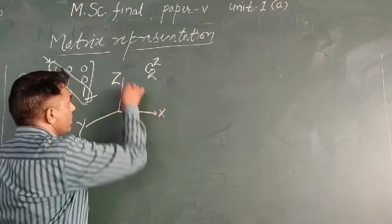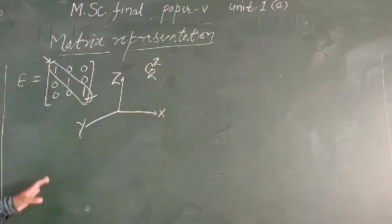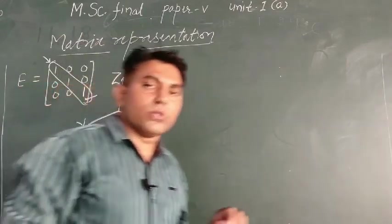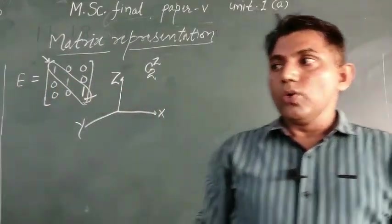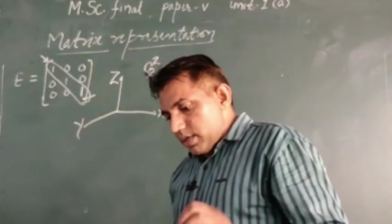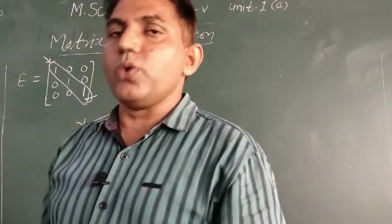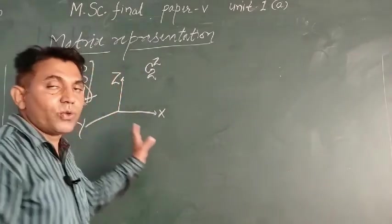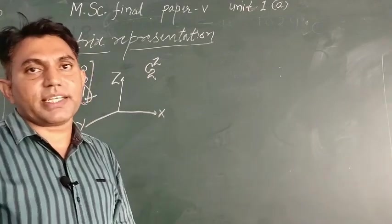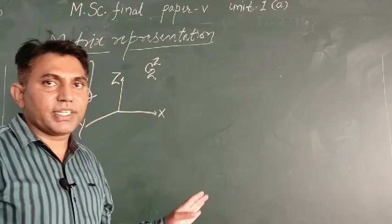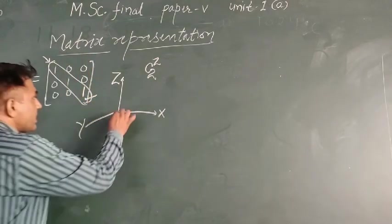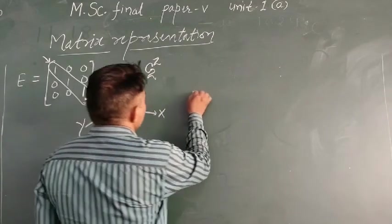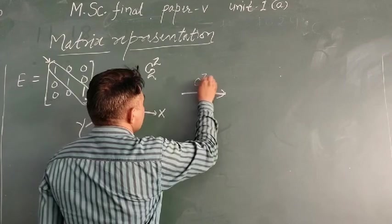Now for any object, its x, y, and z coordinates are represented here. We need to see what effect the symmetry operation has on these coordinates, and that change — we will represent that change in matrix form, as a mathematical statement. That is what its matrix representation will be. So when we take this object and apply the C₂z operation on it...